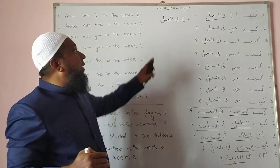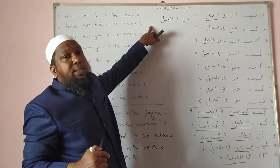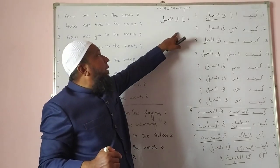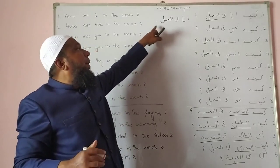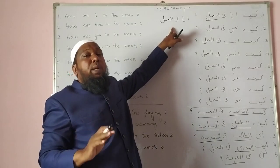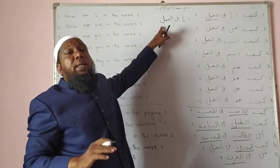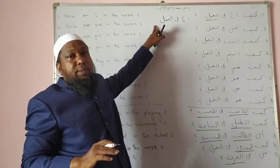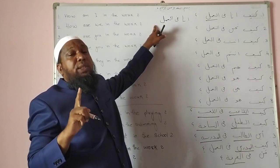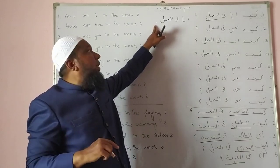Number one is the positive sentence. For example: Ana fil amali — May kaam mein hun — I am in the work. This is one category, and it is called the positive sentence — Jumlah Musbata.